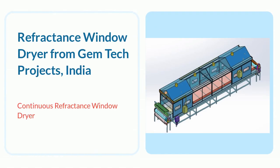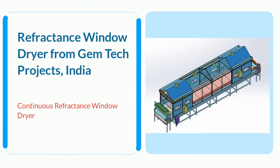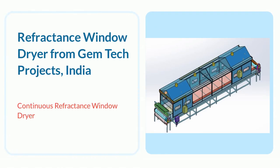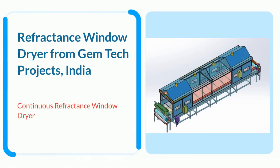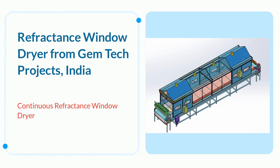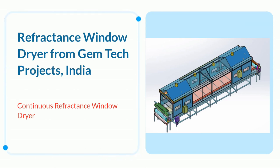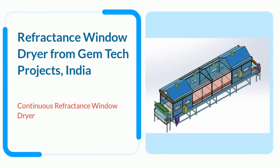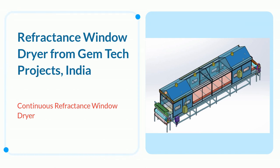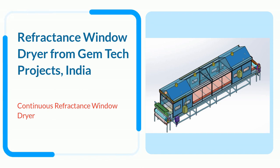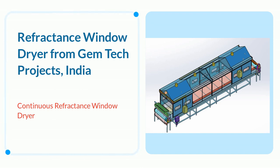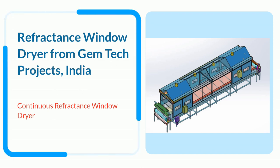Continuous Refractance Window Dryer uses a low-temperature and short-time continuous process to dry delicate, heat-sensitive products. Drying takes place at atmospheric pressure to retain product color, flavor, aroma, and nutritional content.